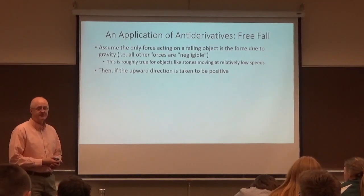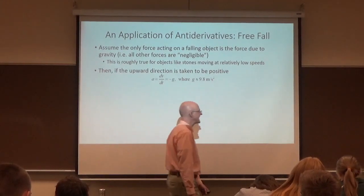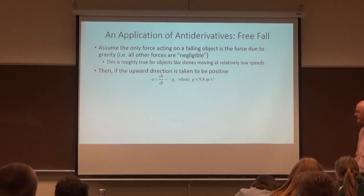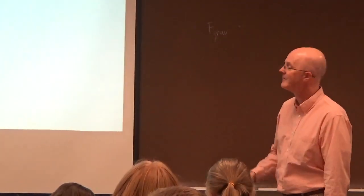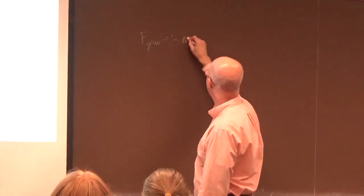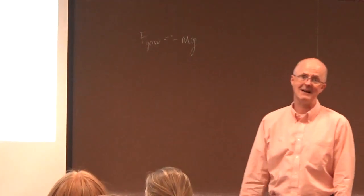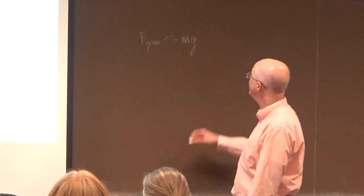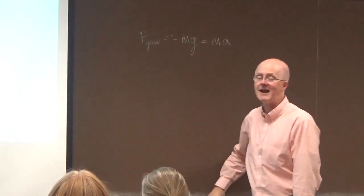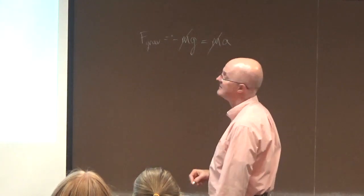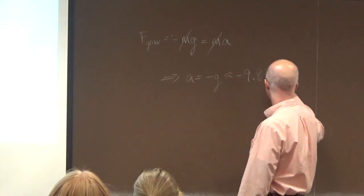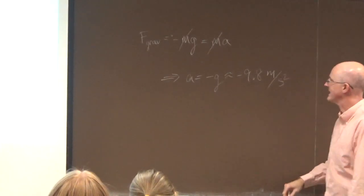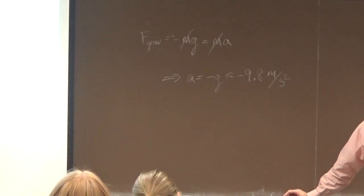If the upward direction is taken to be positive, you can use Newton's second law to show that the acceleration is constant. The downward force due to gravity is negative mg, where m is the mass of the object. Newton's second law says that equals mass times acceleration, ma. The m's cancel and you're left with the acceleration equal to negative g, about negative 9.8 meters per second squared. That's a constant function for the acceleration — it's a constant acceleration.